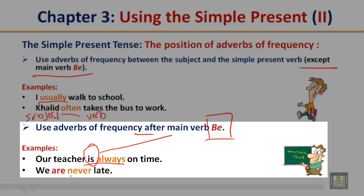We are never late. 'Never' is the adverb of frequency. 'Are' is the main verb be. As you notice, 'never', the adverb of frequency, comes after the main verb be.